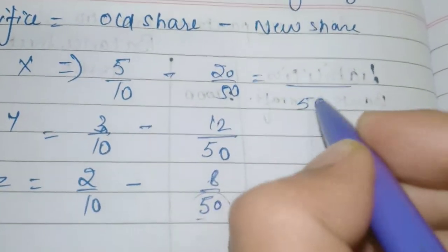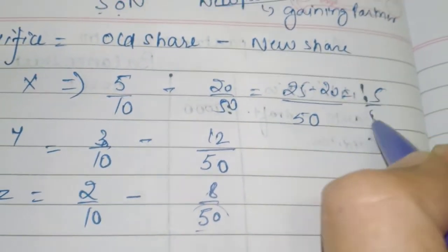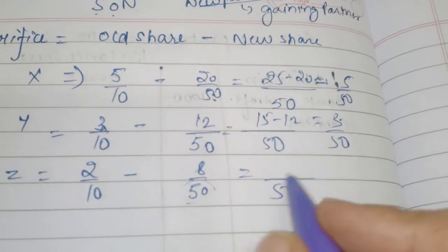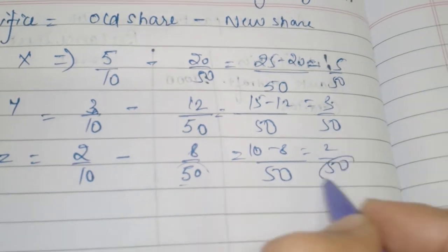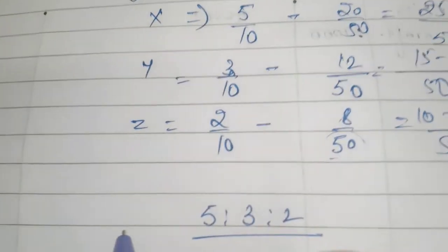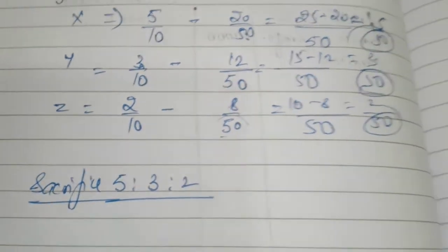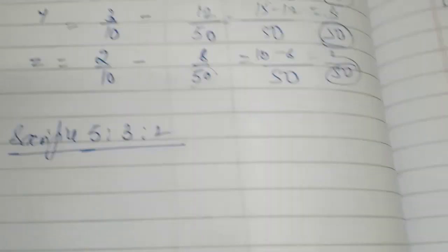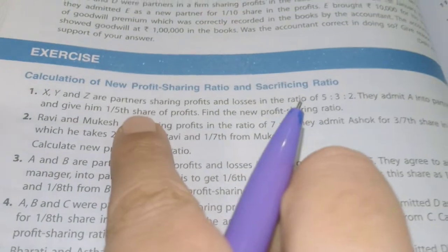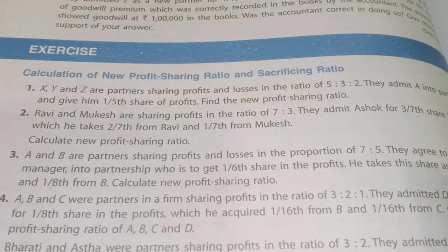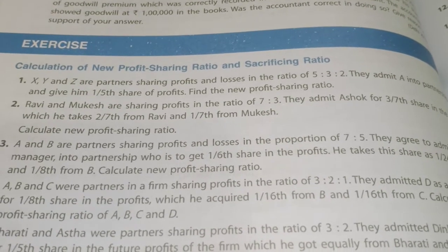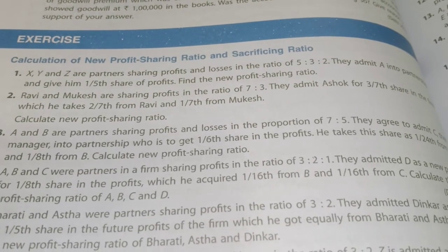Sacrifice ratio aayi 5:3:2 — jo ki old ratio ke equal hai! Toh iska matlab: jab bhi aapko sirf old ratio di ho aur new partner ka share diya ho, aur question silent ho ki kis partner ne sacrifice kiya, toh old ratio aur sacrifice ratio equal hoti hai. Don't waste your time calculating it — just be aware of this fact.